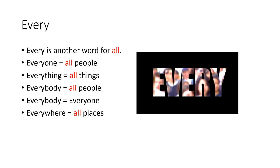The first indefinite pronoun is 'every'. Every has the same meaning as 'all'. For example, if we say 'all people', we say 'everyone'. All things becomes 'everything'. All people also means 'everybody' — everyone, everybody. All places becomes 'everywhere'.